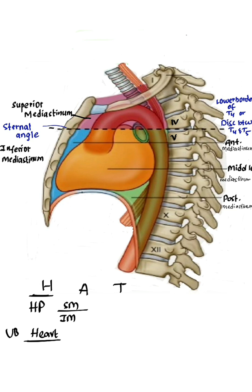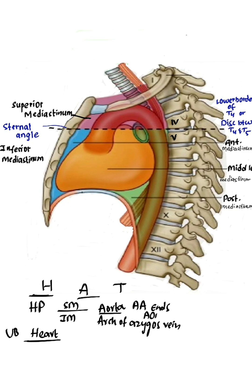A — remember: Aorta and arch of azygos vein. The ascending aorta ends at this level. The arch of aorta begins and ends at this level. The descending aorta begins at this level. It also corresponds to the arch of azygos vein.